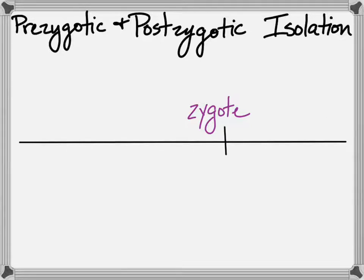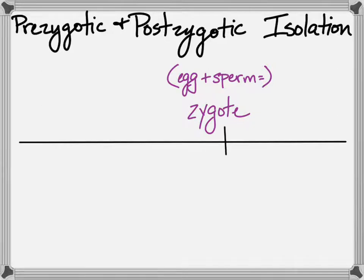Remember, a zygote is formed when an egg and a sperm join together through fertilization. They fuse and form a zygote, and then that zygote cell divides to become an embryo.